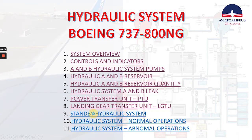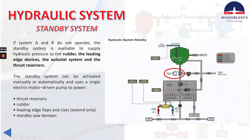Now let's talk about the standby hydraulic system. If system A and B do not operate, the standby system is available to supply hydraulic pressure to the rudder, the leading edge devices, the auto slat system, and the thrust reversers. The standby system can be activated manually or automatically and uses a single electric motor driven pump.